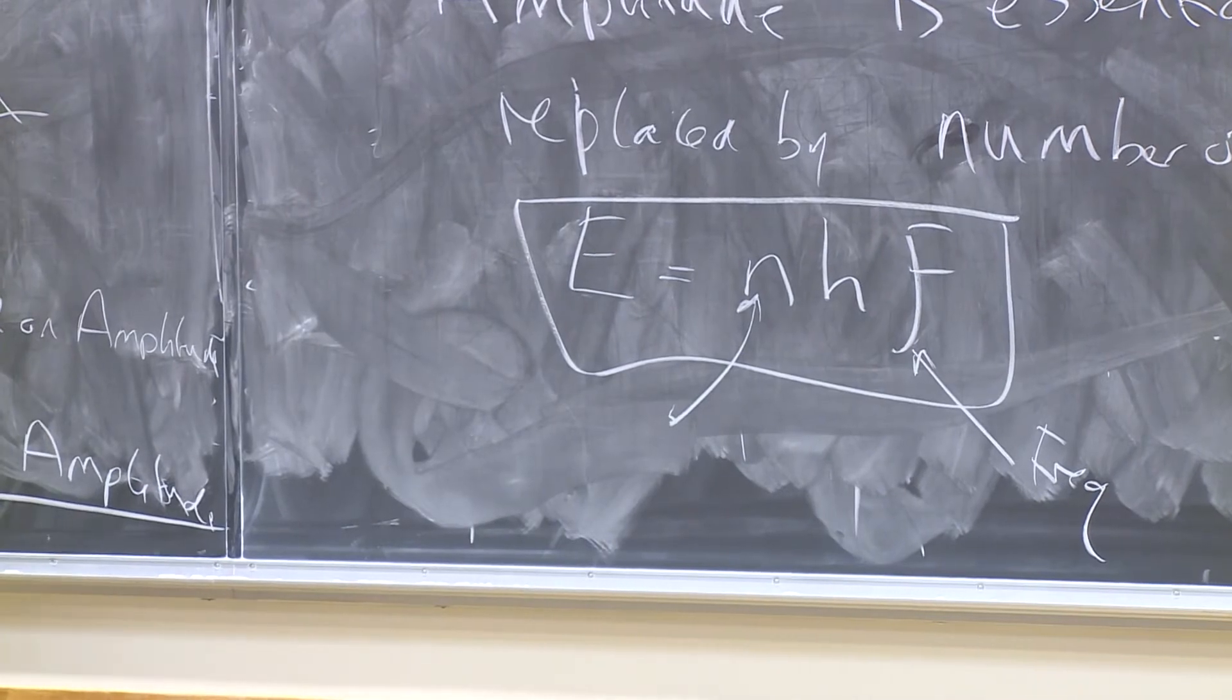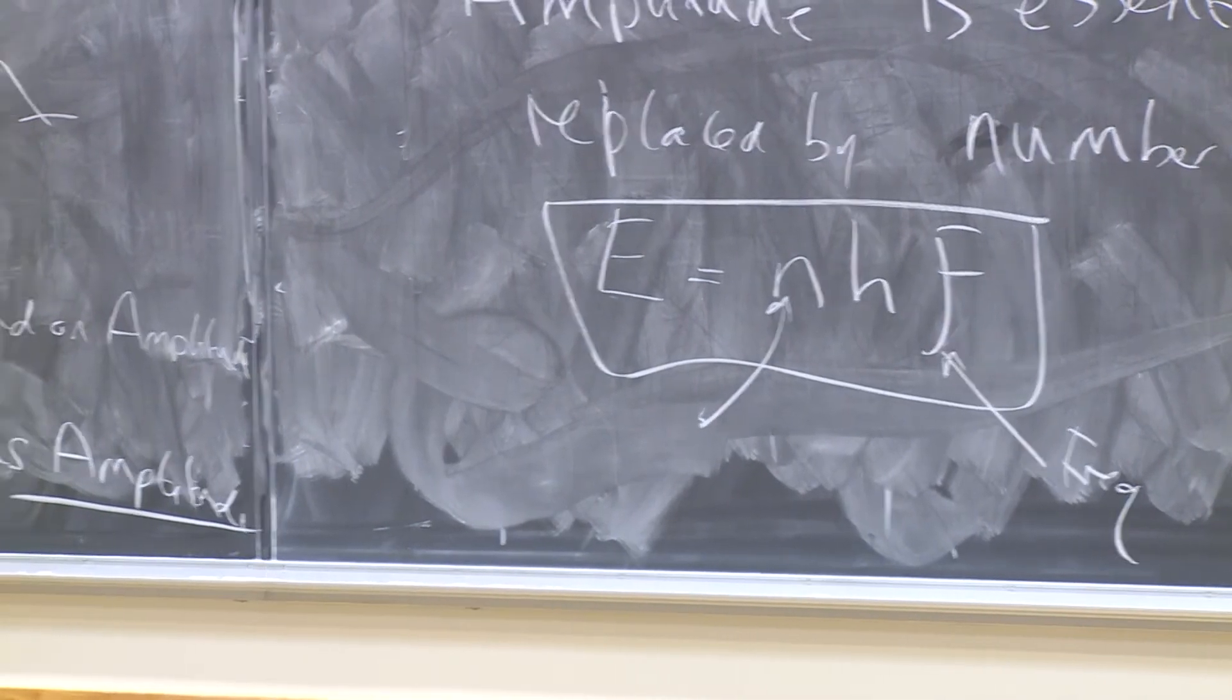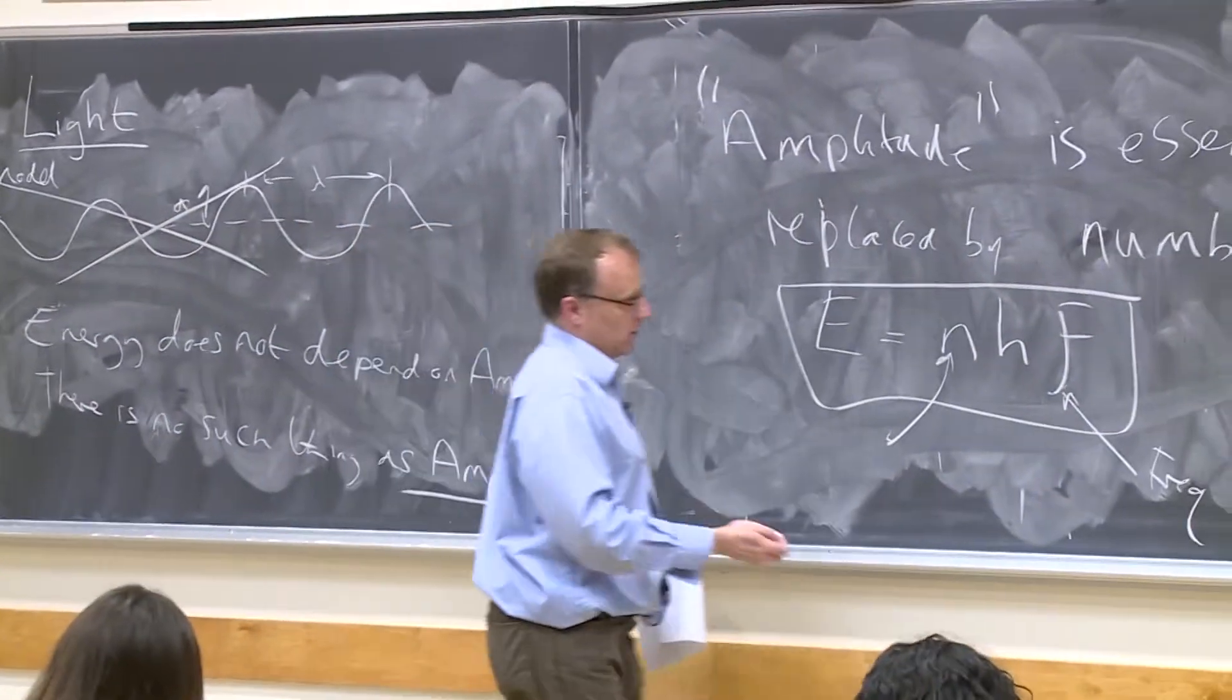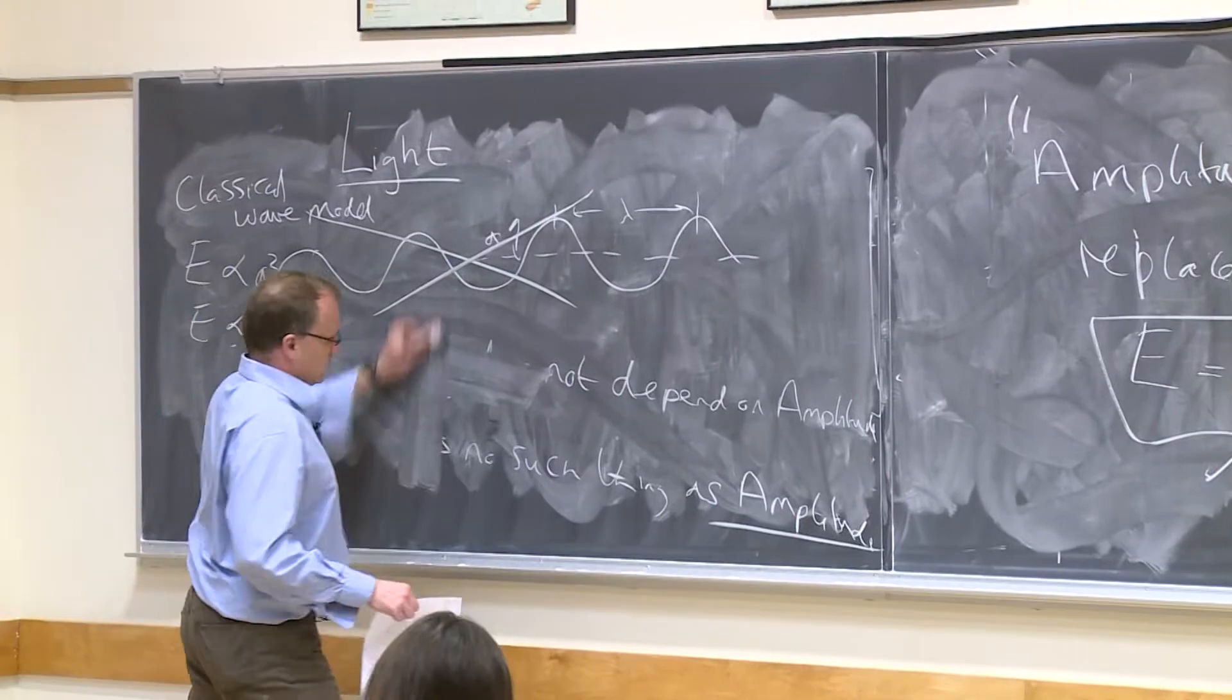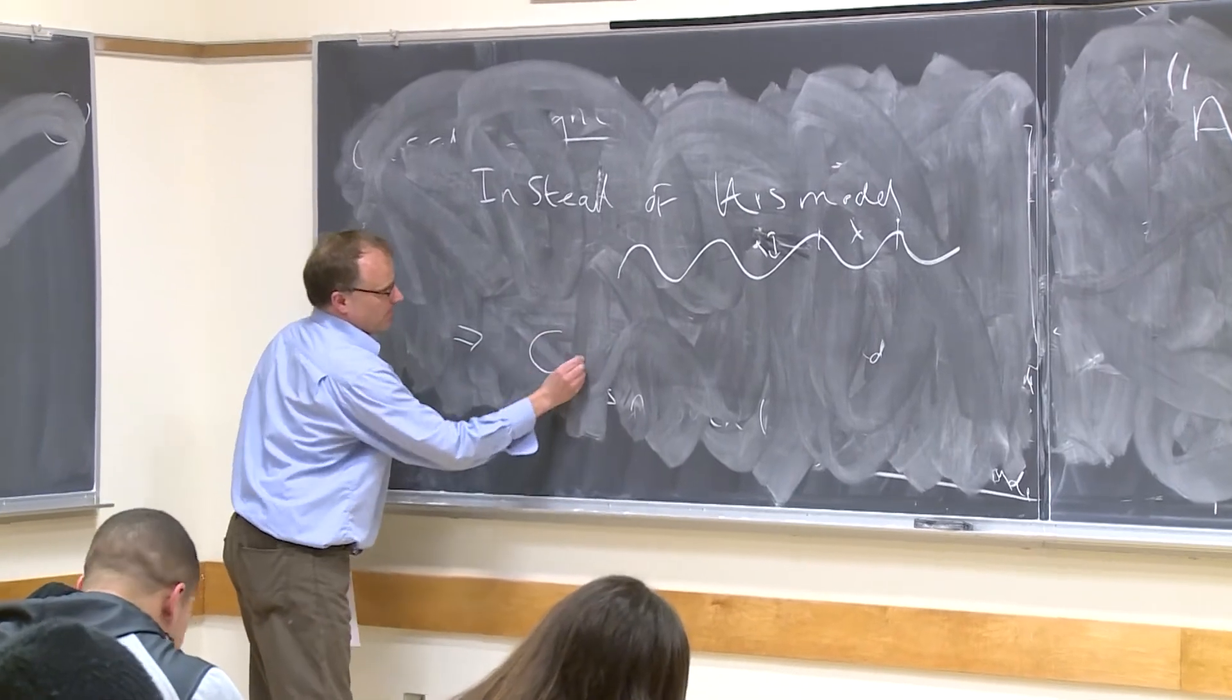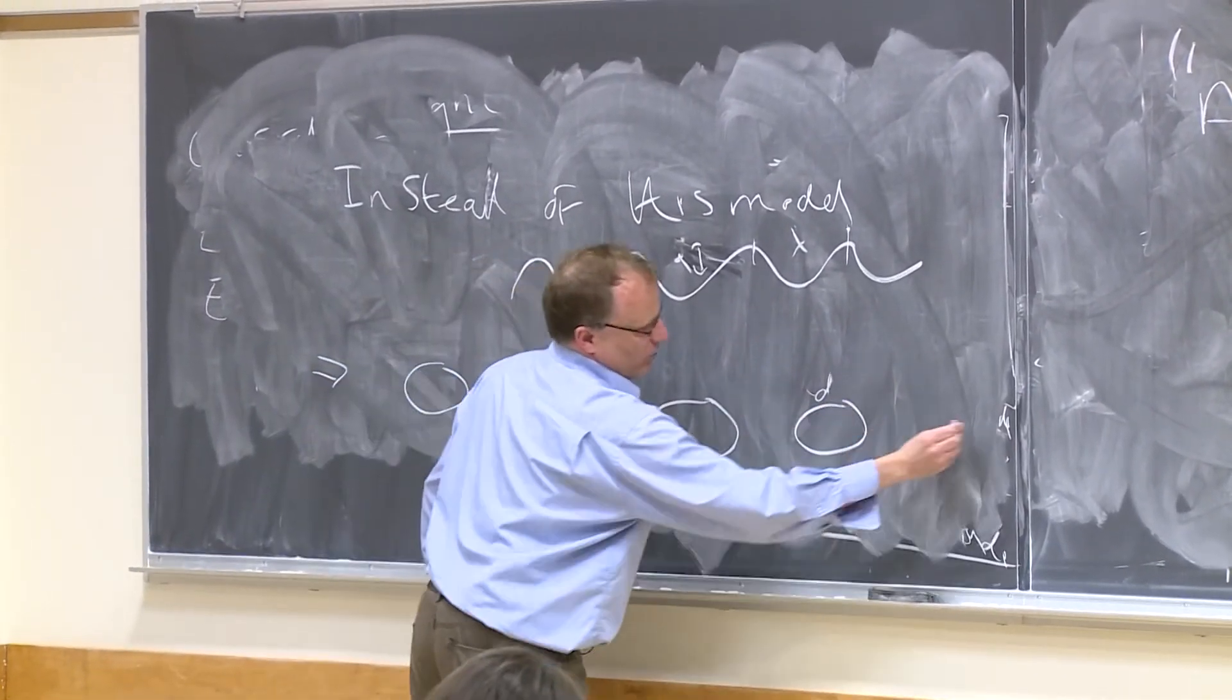So instead of having this long, wavy thing that spreads out, we have this. The new model looks like this. So instead of this model, we have this model. This is what light really looks like.